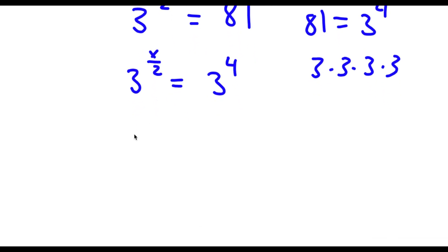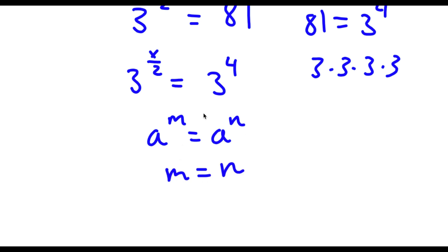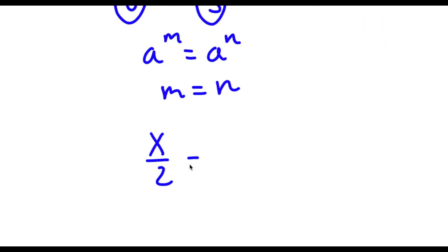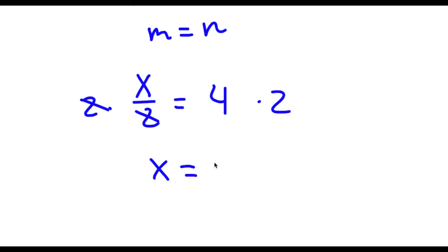Now if I have something in the form a to the power of m is equal to a to the power of n, then m is equal to n. So I have 3 to the power of x over 2 equal to 3 to the power of 4. Both bases are 3, meaning the exponents x over 2 and 4 are equal to each other. So x over 2 is equal to 4. Multiplying both sides by 2, I get x is equal to 8.